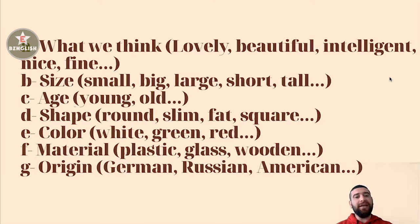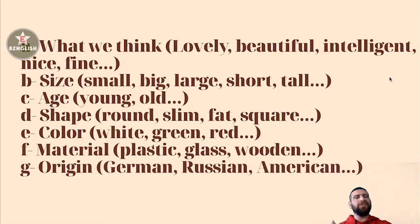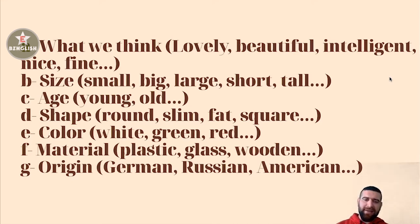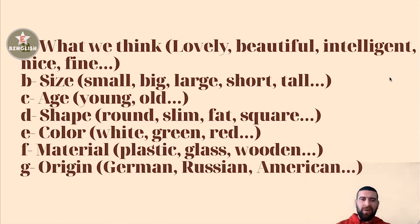Origin — همون Nationality — ملیت و اصلیت یک شخص. مثلاً German، Russian، American، Iranian، Persian — اینا همه Origin هستن. Iranian و Persian هر دو برای ایرانی‌ها به کار می‌ره. An American man یعنی یک مرد امریکایی، a Russian woman یعنی یک زن روسی.